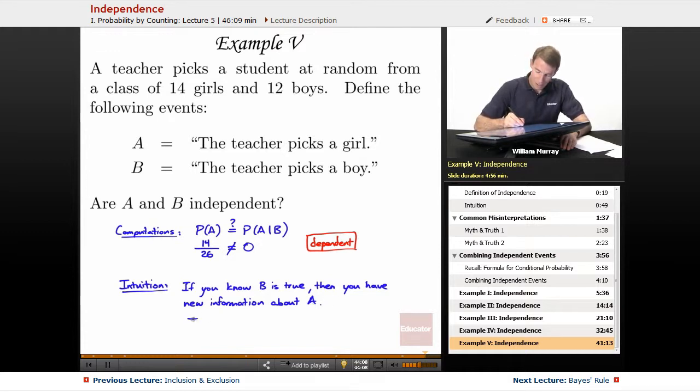So, in fact, these events are disjoint. There's no overlap between them, which means that if you know one is true, then you know the other one is false. You do get some new information, which means they're not independent, which means they're dependent.